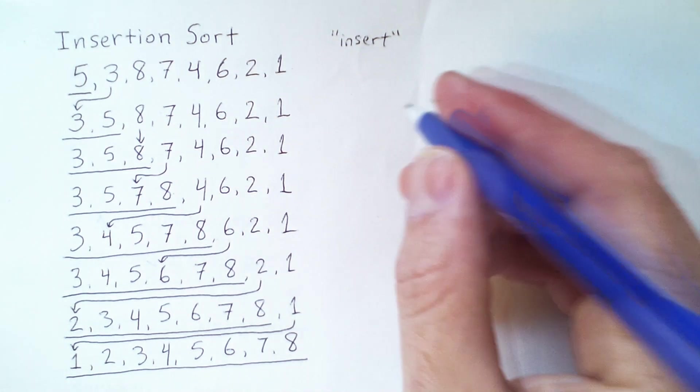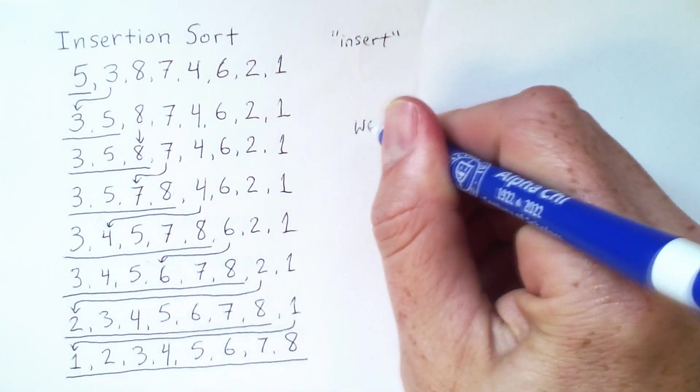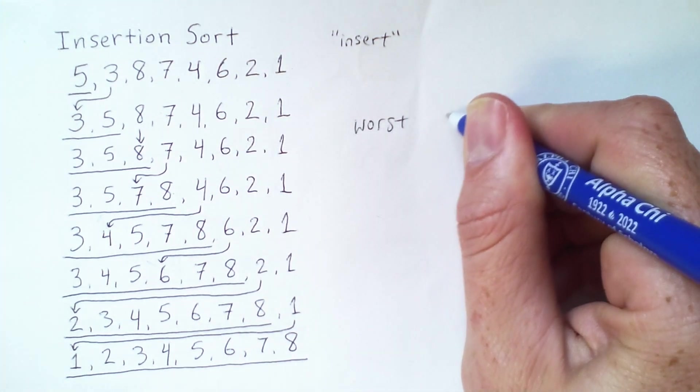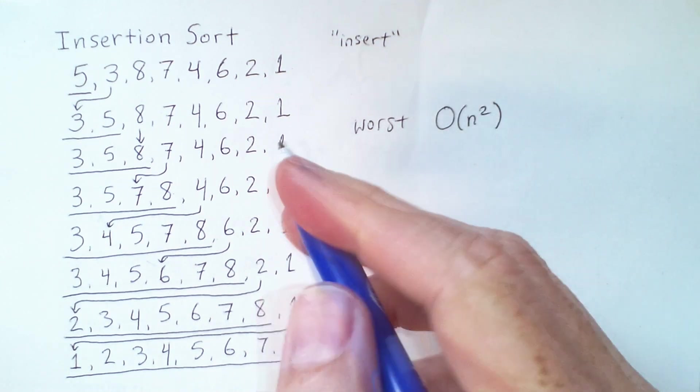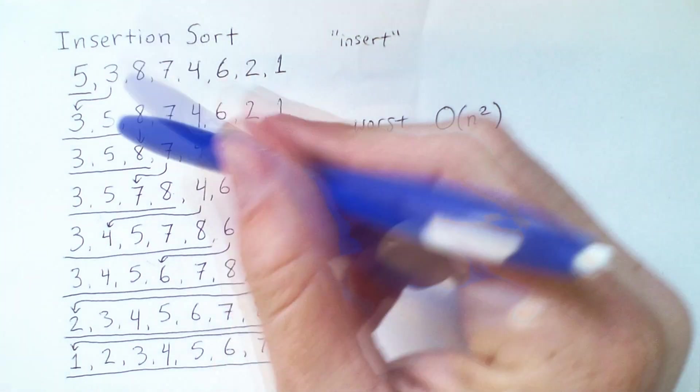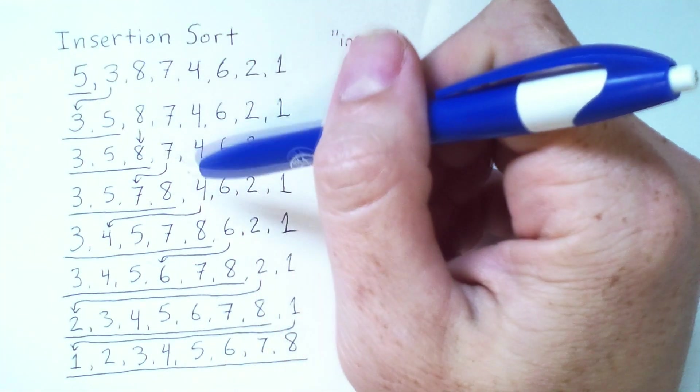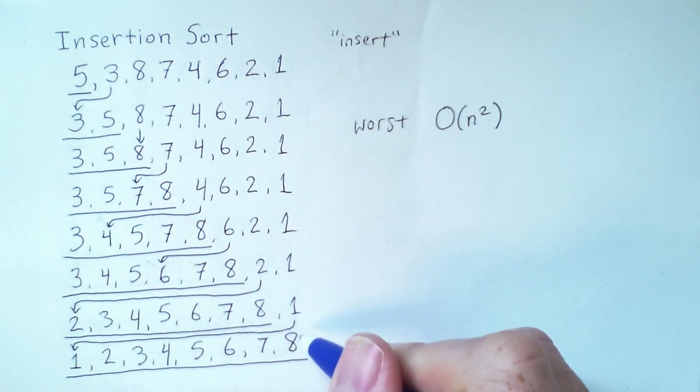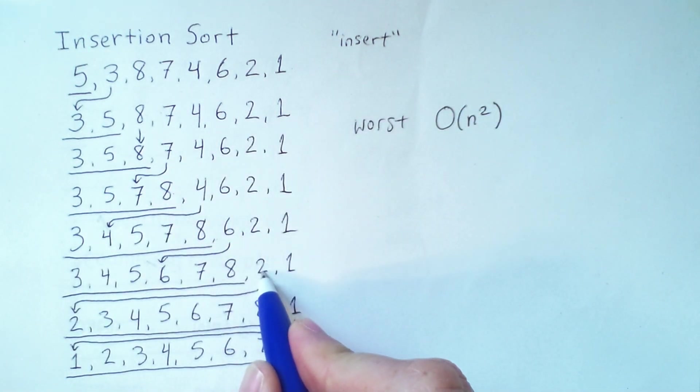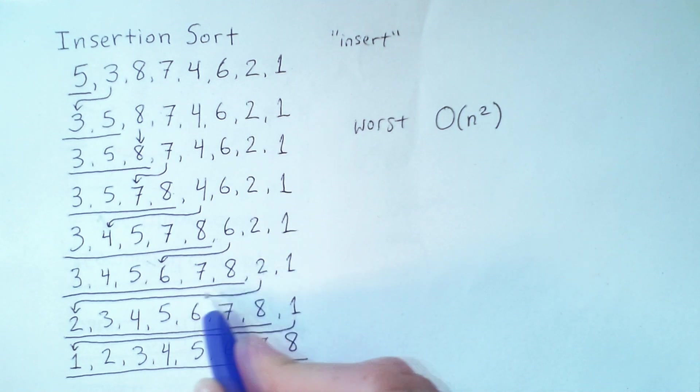Now, in terms of efficiency, the worst case for insertion sort is O of n squared. And this should be clear because I potentially have to move an element back to the beginning, as happened on these last two steps. So here, the 2 moved 1, 2, 3, 4, 5, 6 positions.